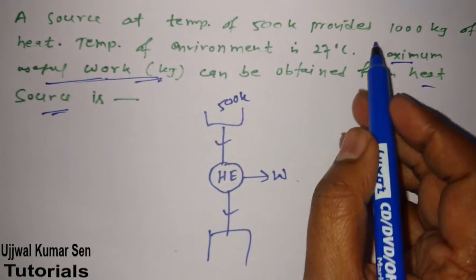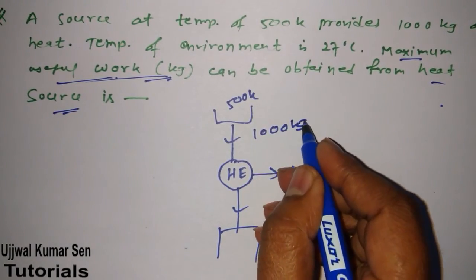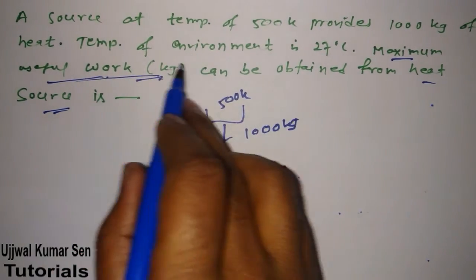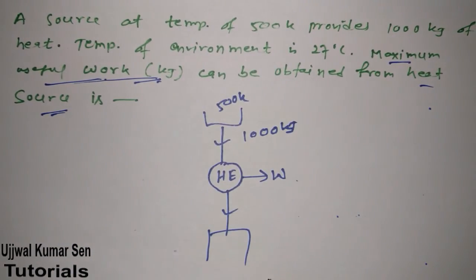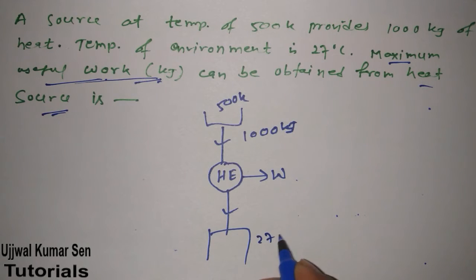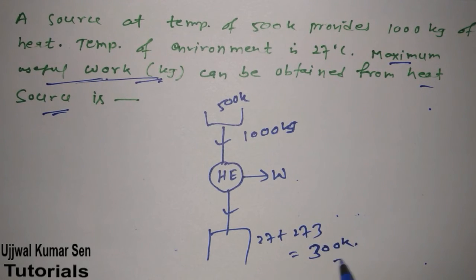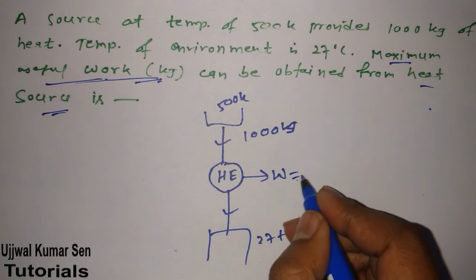The other source is 27 degrees Celsius, which means 27 plus 273, so it's 300 Kelvin. Now, what they've asked: maximum useful work. We have to find out W equals what.